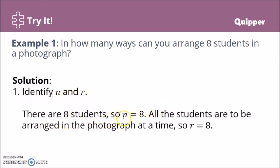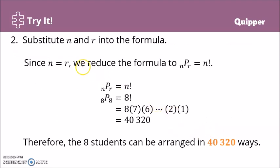There are 8 students, so n equals 8. All the students are to be arranged in the photograph at a time, so your r is also 8. Substitute n and r. That's pretty easy. nPr is just equal to n factorial, so 8P8 is 8 factorial.